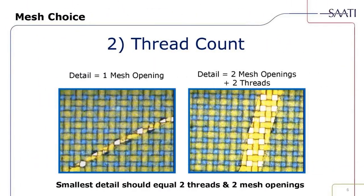Thread counts are the nuts and bolts of mesh manufacturing. The detail equaling one mesh opening versus two mesh openings plus two threads is illustrated here. For anyone trying to achieve fine simulated process and finer detail, you always want to target two mesh openings plus two threads, because the smallest detail should equal two threads and two mesh openings.